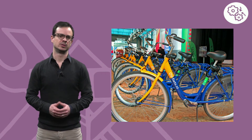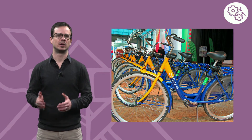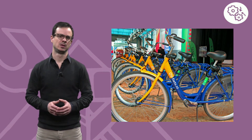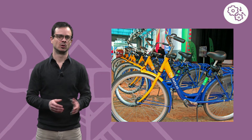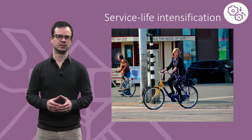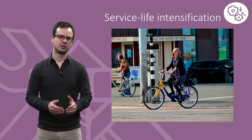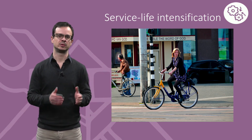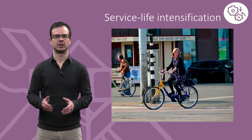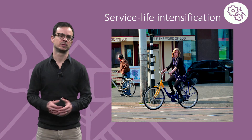A second type of reuse activity involves the shared use of a product by a large number of users, one after the other. If you live in a large city, you might have seen places where you can rent a bicycle for a day or even just for a few hours. As a user, you no longer need to own the bicycle but instead only get access to it for as long as you actually need to use it. We will call this type of reuse service life intensification. This has the advantage from a circular economy perspective of reducing the number of products that have to be produced in the first place, as more than one user can take advantage of the same bicycle even over the course of a single day.